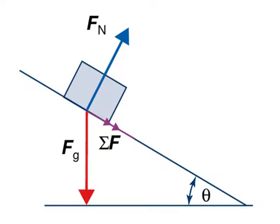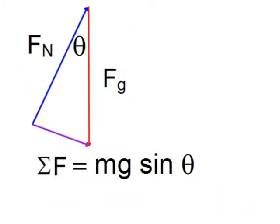The sum of the forces due to the weight and normal reaction will act down the slope. The sum of the forces is equal to the weight multiplied by sine beta.